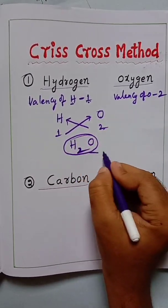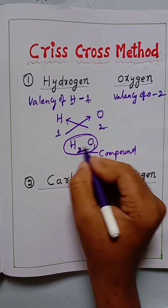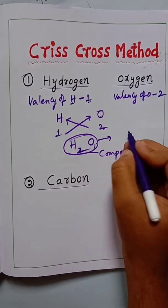So this is the compound formula: H2O1. Otherwise you can write H2O - this is the compound formula of water.